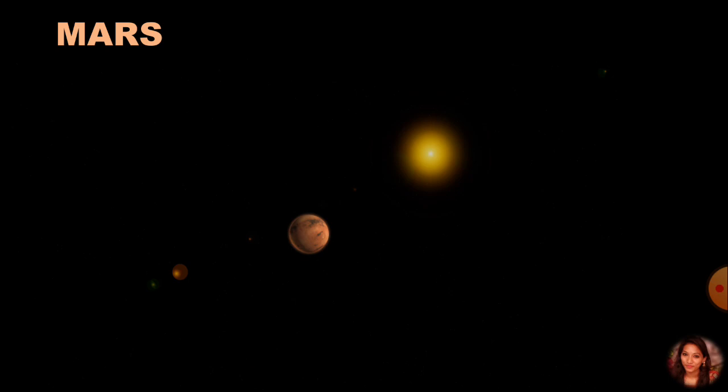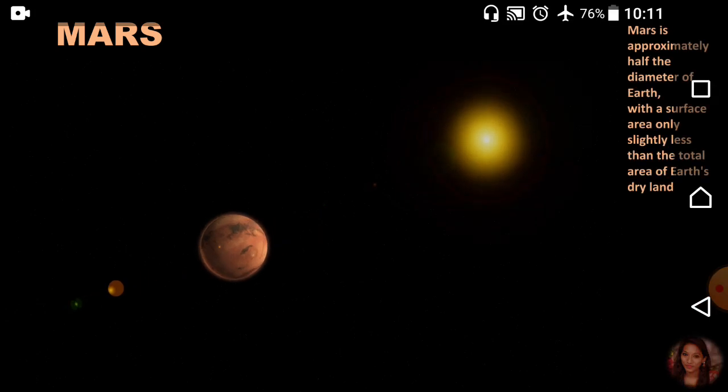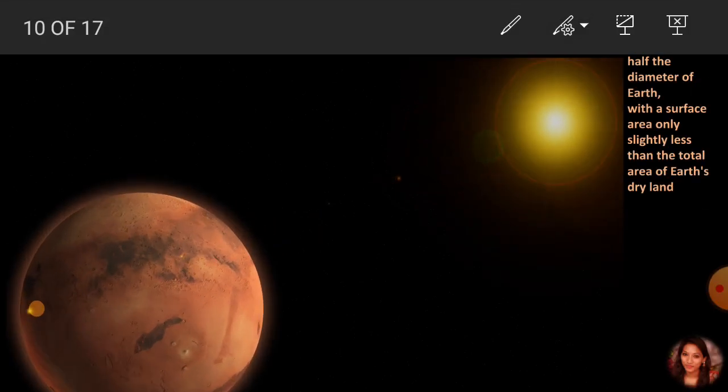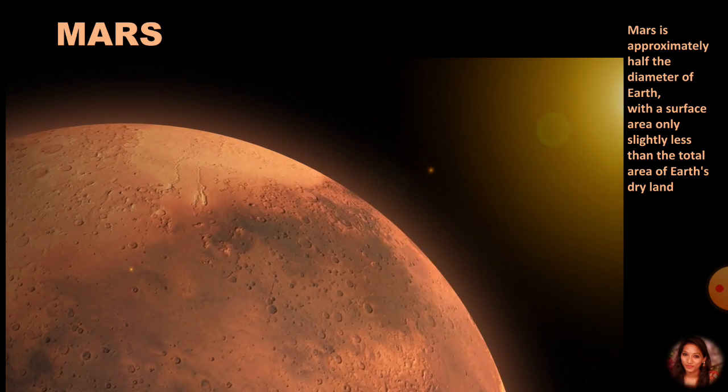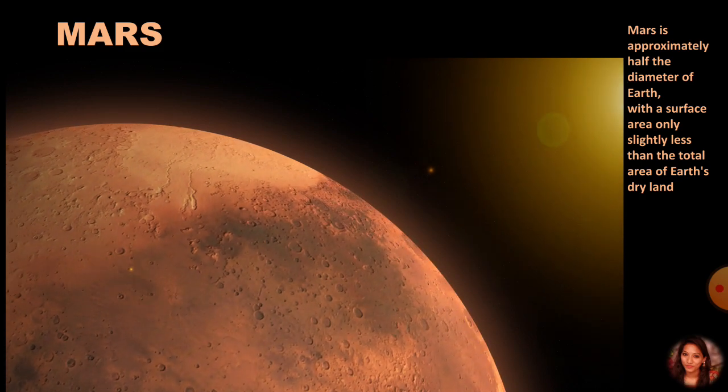After Earth, we have another planet named Mars, also known as Mangal. Mars is approximately half the diameter of Earth, with a surface area only slightly less than the total area of Earth's dry land. Mars is the first planet outside the orbit of Earth. It appears slightly reddish and therefore is also called the Red Planet.